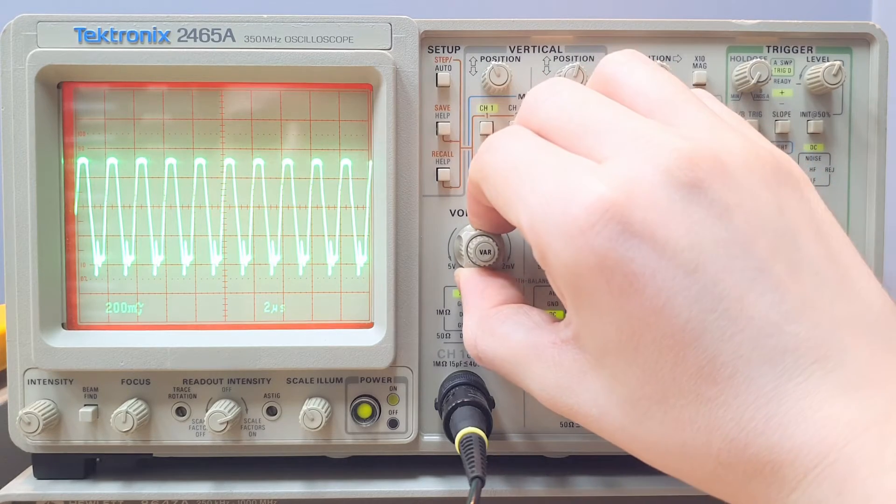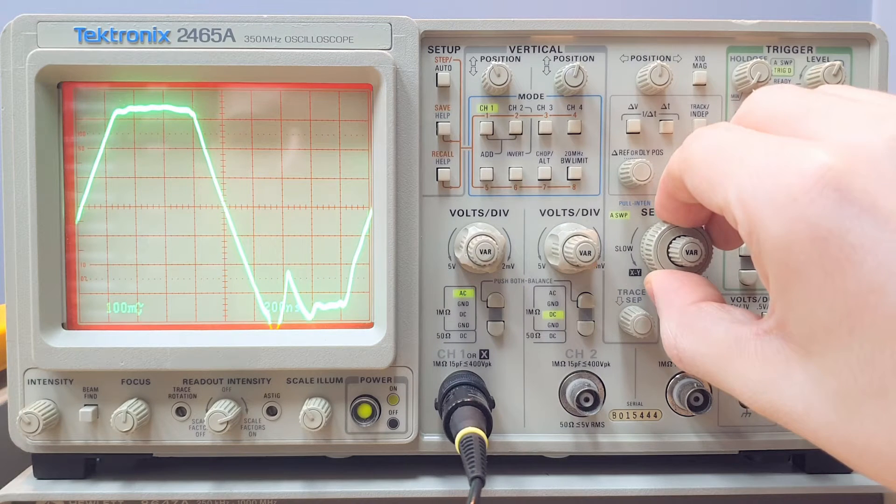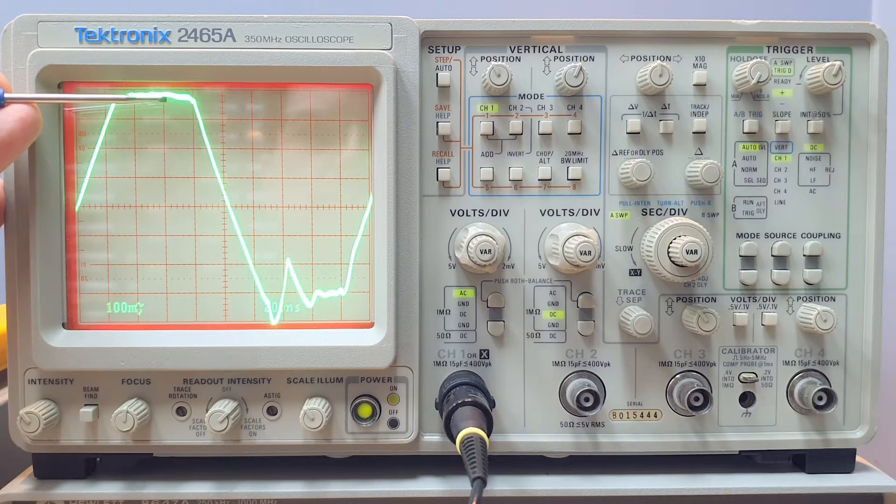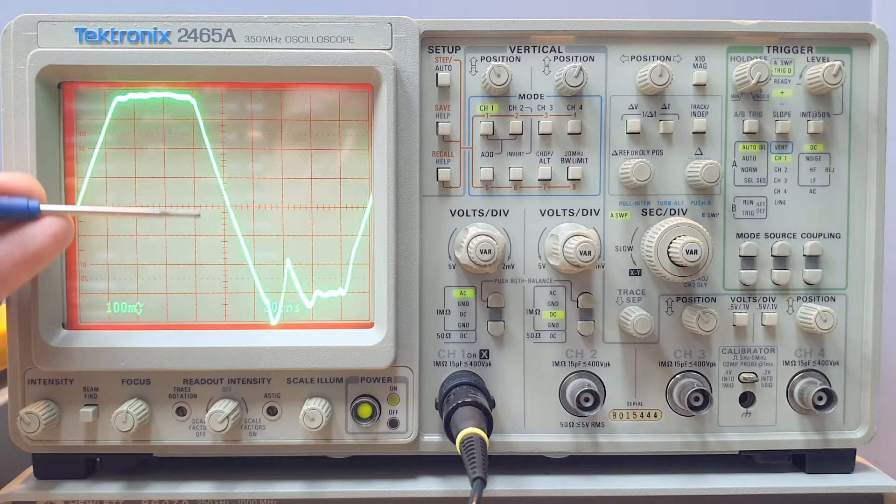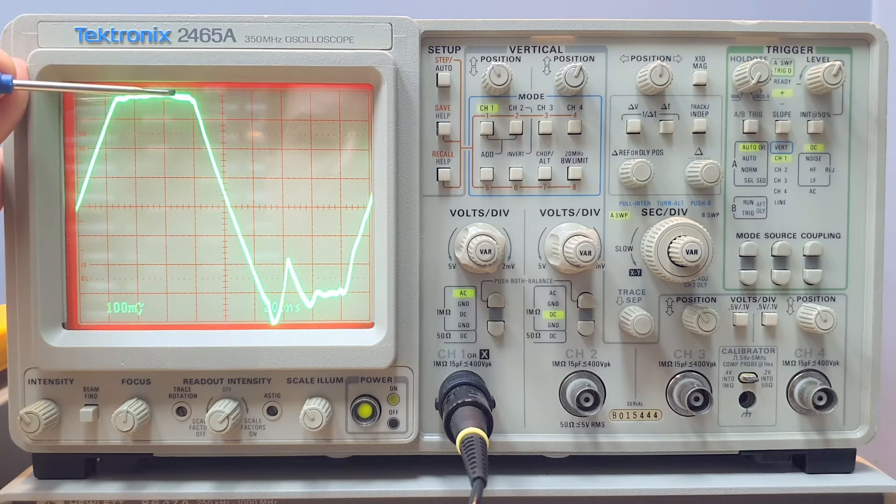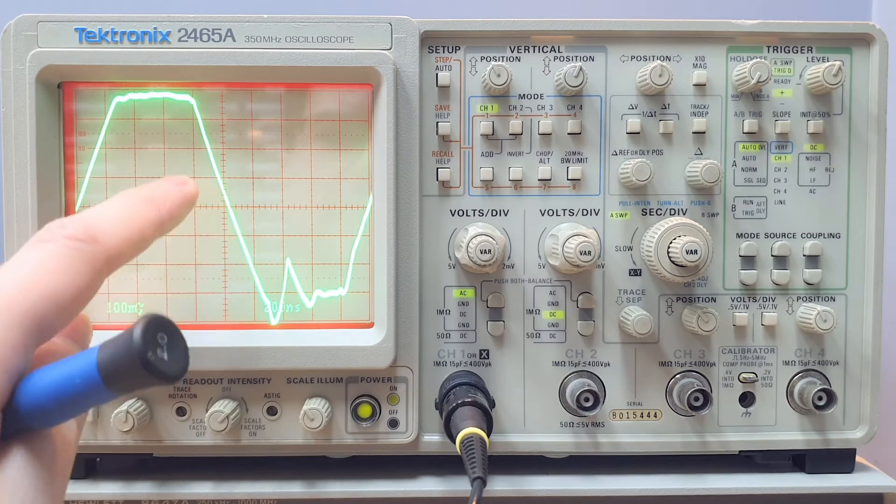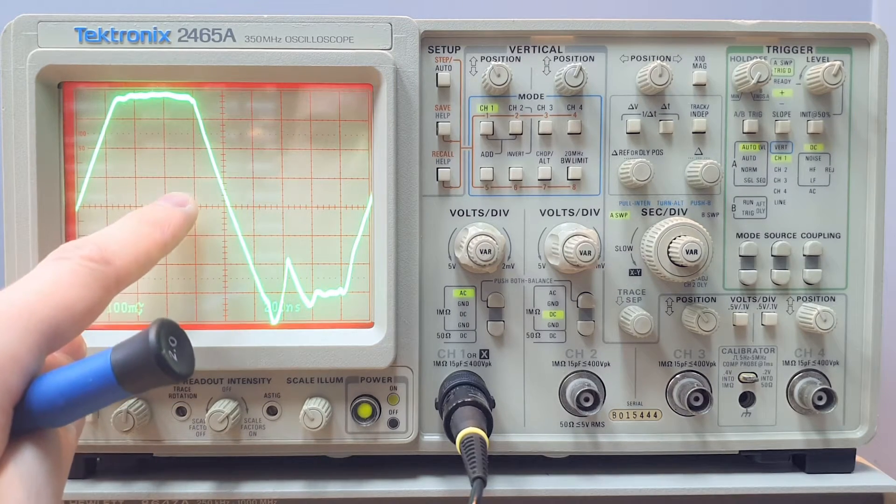We see that it becomes very easy to see this slew rate if we increase the sweep time here. And look at this. This is the slew rate of the amplifier. Here the op-amp is showing its maximum speed. It can change the voltage over time. And this rate is the slew rate and this is what you're going to measure here.